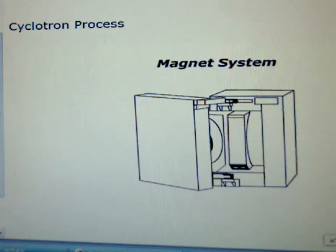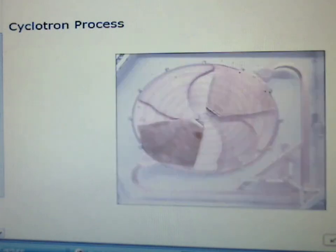While the new cyclotrons are smaller, the magnet weighs 18 metric tons. The two magnet poles are constructed of high-quality steel. The coil consists of 192 turns of water-cooled copper tubes on each pole.